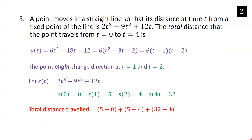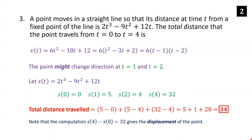The total distance traveled is the sum of the absolute differences: 5 minus 0, plus 5 minus 4, plus 32 minus 4 — giving 5 plus 1 plus 28, which equals 34. Note that going from s(1) to s(2), the point switched direction, so we take 5 minus 4 rather than 4 minus 5. If we had computed s(4) minus s(0) equals 32, that would give the total displacement, not the total distance traveled.